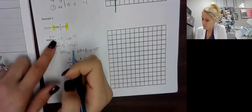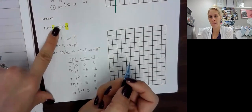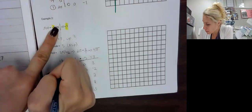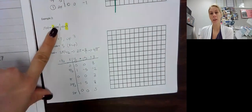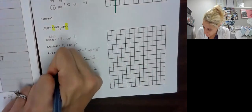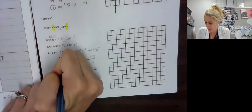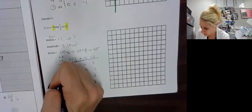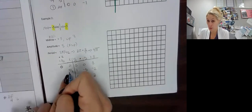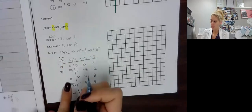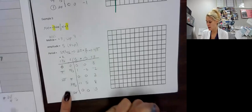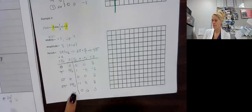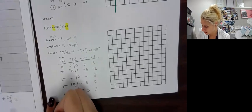Now our X values. This is multiplying by 1 half on the inside, so we do the opposite and divide by 1 half. Dividing by a fraction is the same as multiplying by its reciprocal, so we multiply each X by 2. That gives us: 0, pi, 2 pi, 3 pi, and 4 pi. And what did I say? That ending point should be our period — and it is 4 pi.